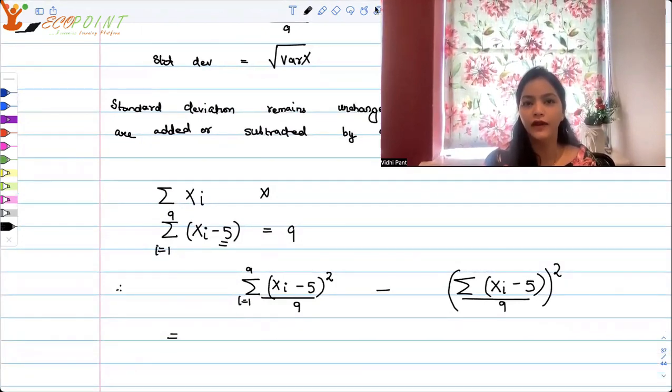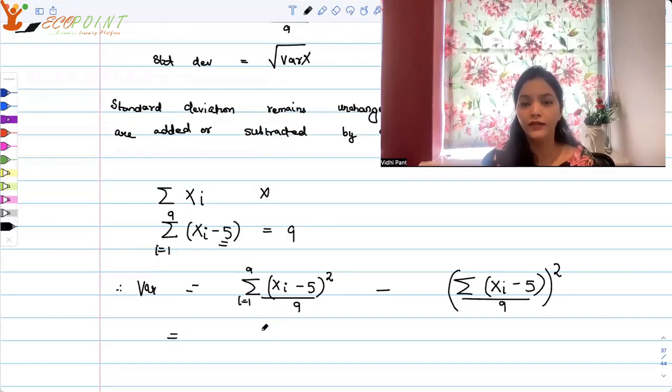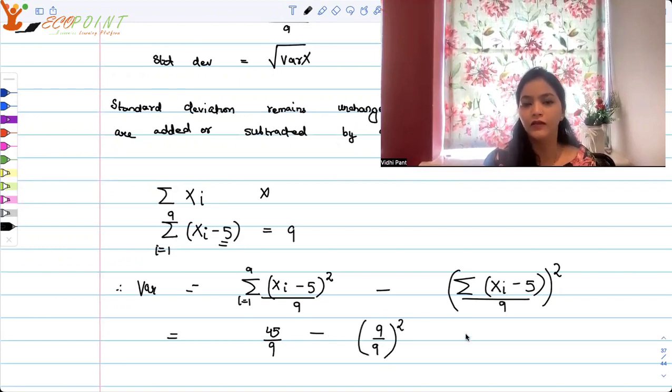This sum is 45. The variance would be 45 upon 9 minus (9 upon 9) whole squared. So that means it is 5 minus 1, which is 4.